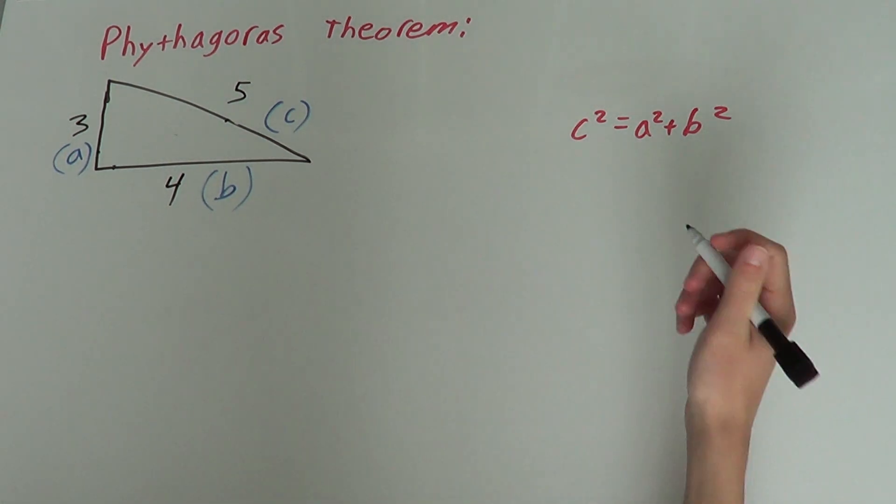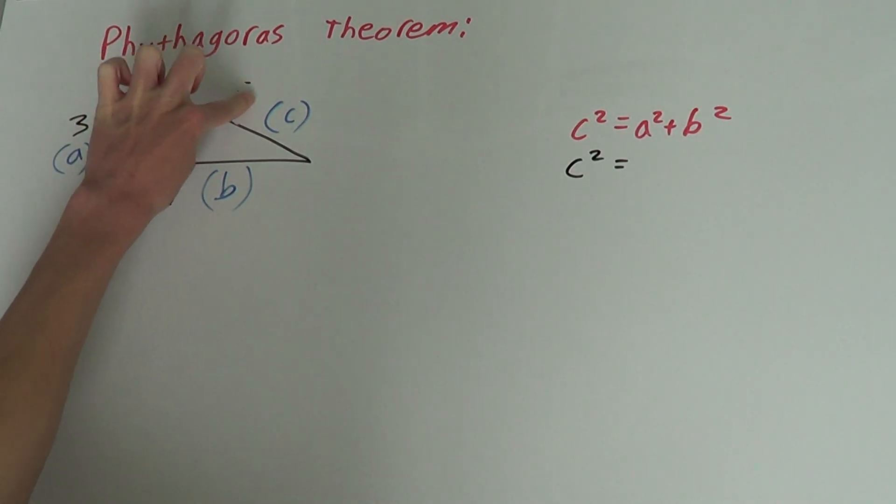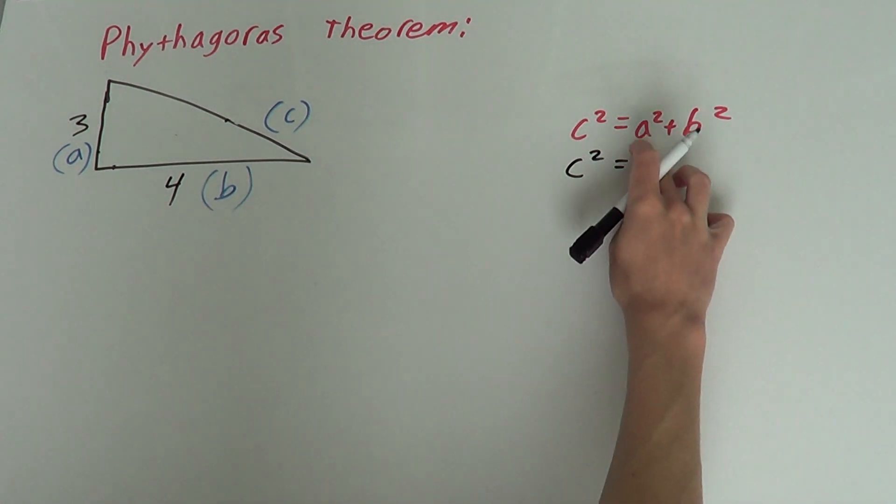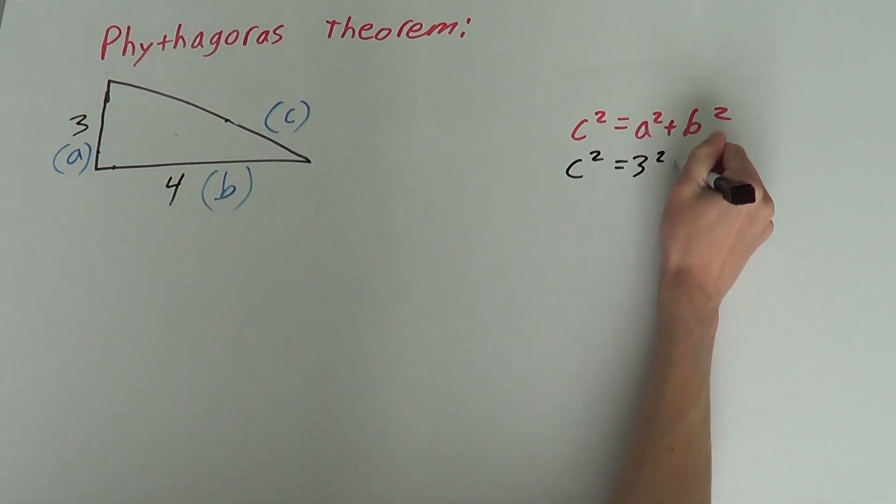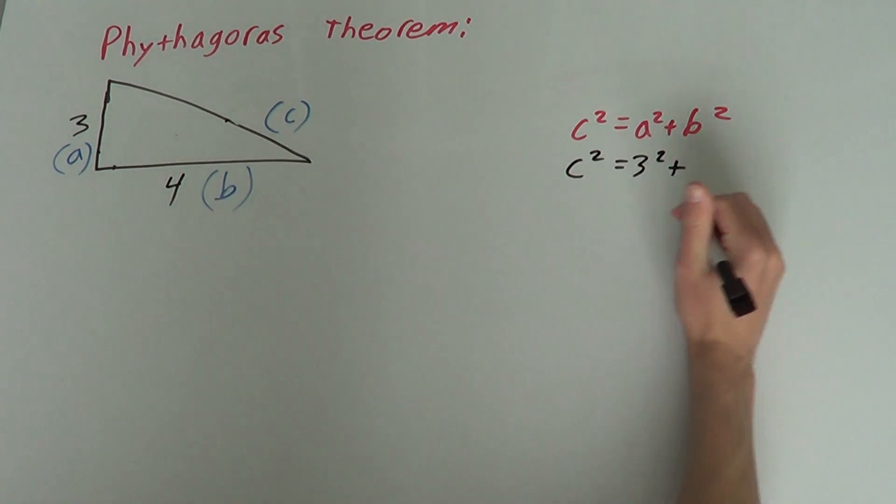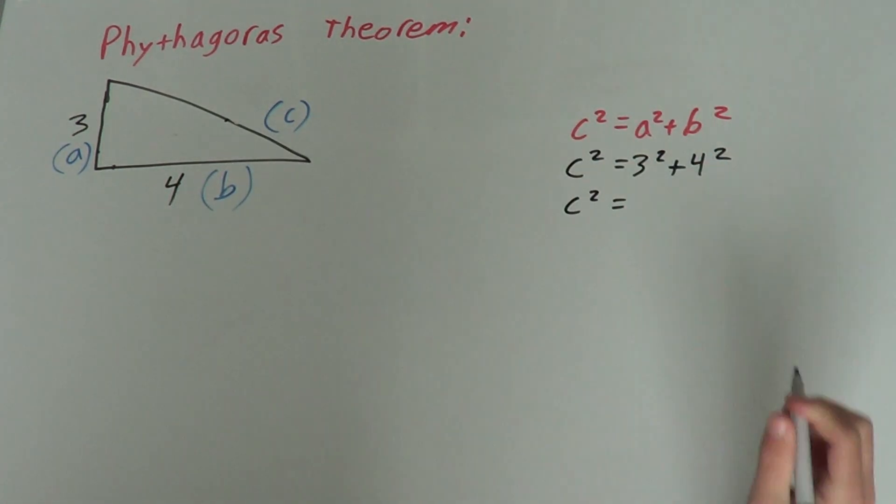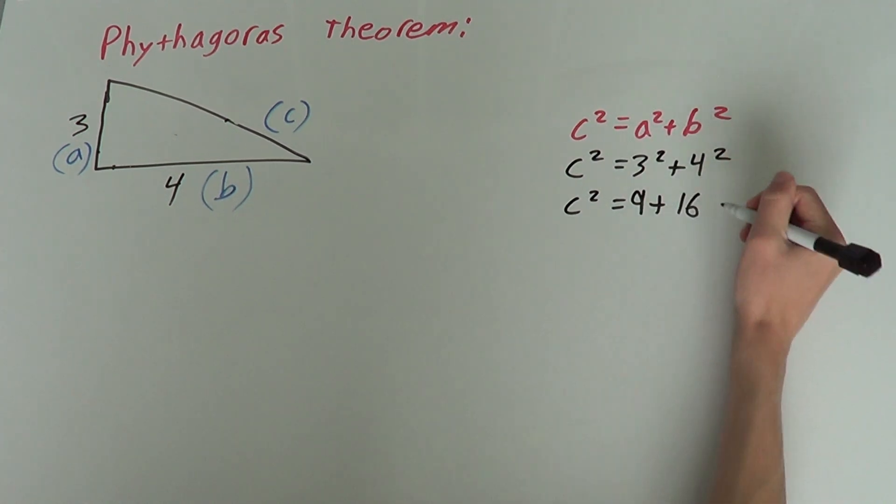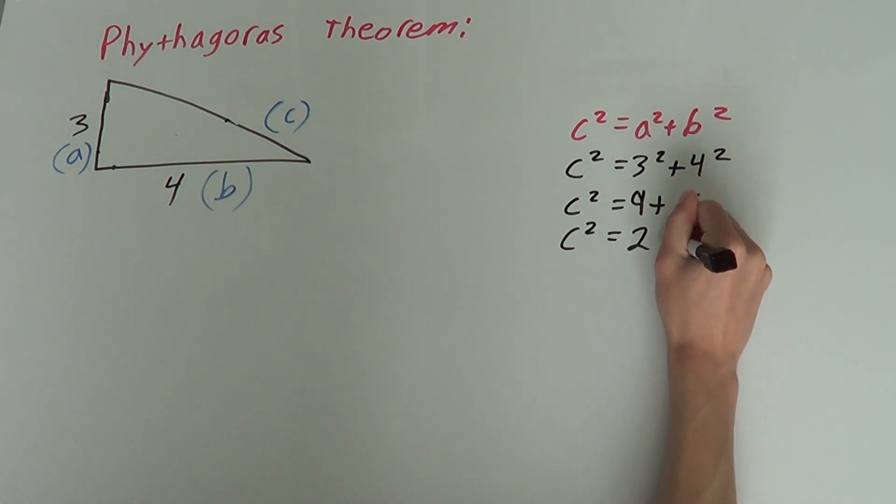So, to solve, substitute any values. So, c squared, if we didn't know this was five and we're finding c, we go c squared equals a squared. We substitute for a. a is three. So, this is three squared plus b, which is four, so plus four squared. We keep working down. So, c squared equals three squared, which is nine, plus four squared, which is sixteen. And then c squared equals nine plus sixteen, which is twenty-five.